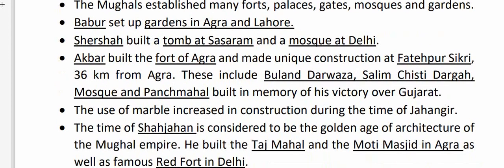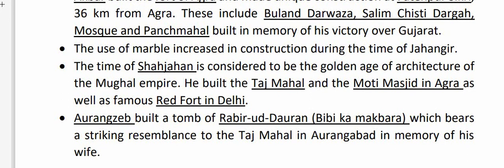The Mughals established many forts, palaces, gates, mosques, and gardens. Babur set up gardens in Agra and Lahore. Sher Shah built a tomb at Sasaram and a mosque at Delhi. Akbar built the fort of Agra and made unique constructions at Fatehpur Sikri, 36 km from Agra, including Buland Darwaza, Salim Chishti Dargah, Mosque, and Panch Mahal, built in memory of his victory over Gujarat. The use of marble increased during the time of Jahangir. The time of Shah Jahan is considered the golden age of Mughal architecture — he built the Taj Mahal, Moti Masjid in Agra, and the famous Red Fort in Delhi. Aurangzeb built a tomb called Bibi Ka Maqbara in Aurangabad, bearing a striking resemblance to the Taj Mahal, in memory of his wife.